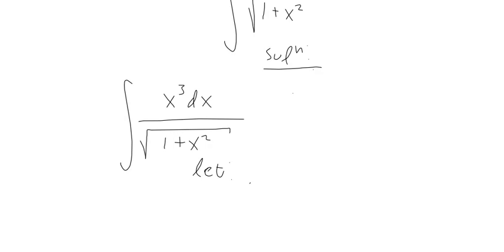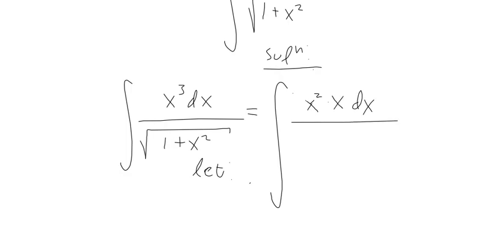Here's a trick: we can split up the X cubed. This is equivalent to the integral of X squared times X dx all over the square root of 1 plus X squared. In other words, you can manipulate this by splitting X cubed into its exponential factors — X squared times X is equivalent to X cubed.